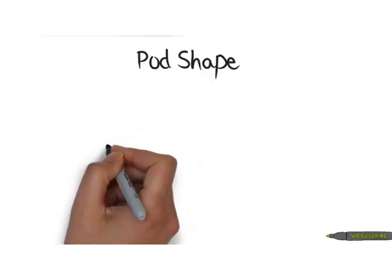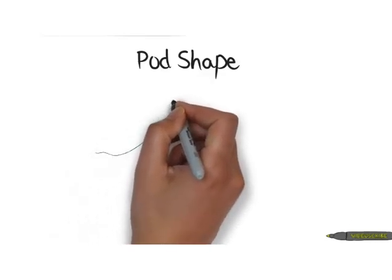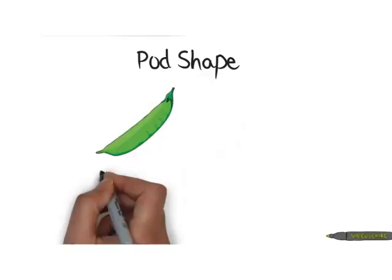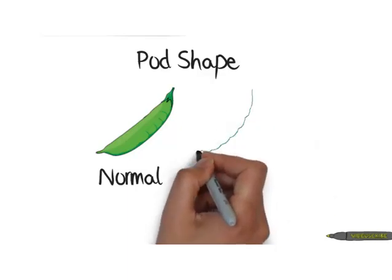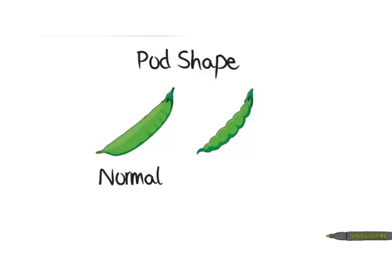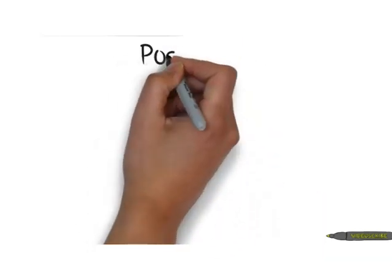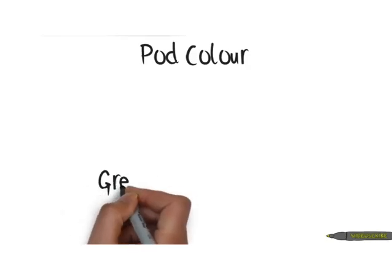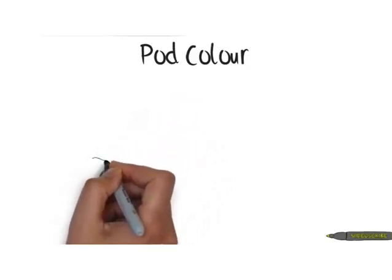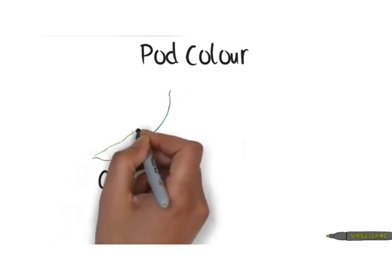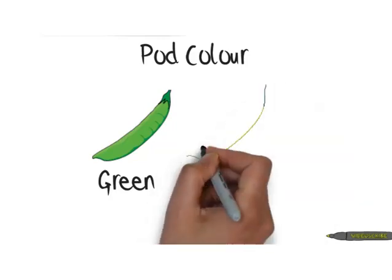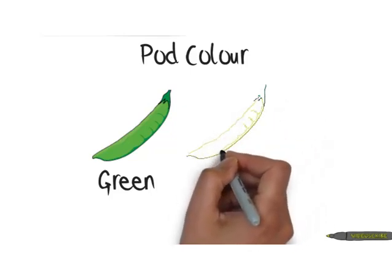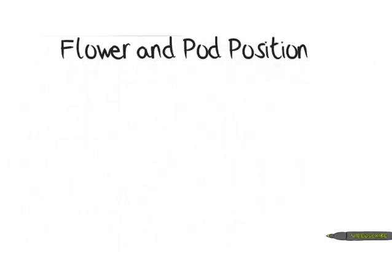Pod shape is where the actual beans grow. The pod shapes were either normal or constricted — we can see in this diagram that they're constricted around the individual beans. Pod colour was another characteristic: pods were either green or yellow. It was these characteristics which he looked at, and they were very observable, which was the important thing about the characteristics he chose.